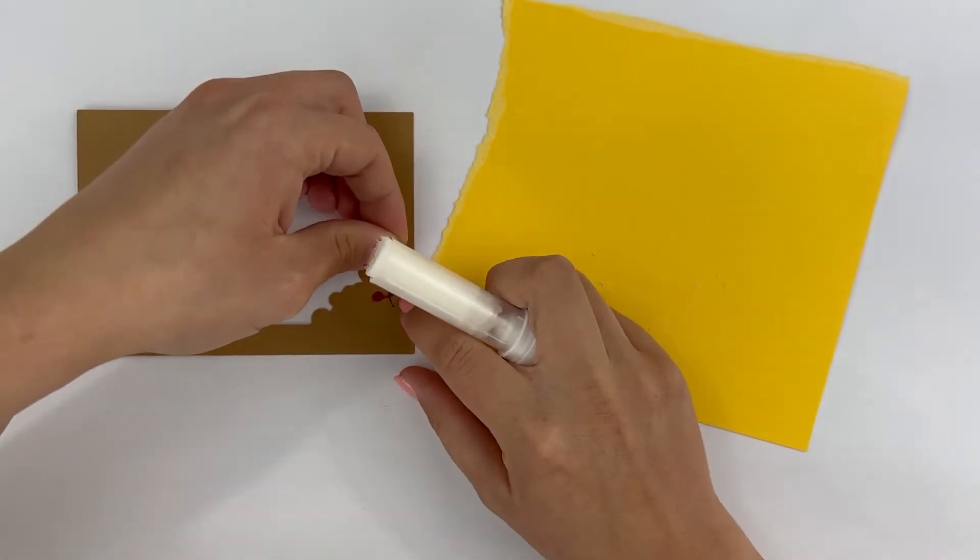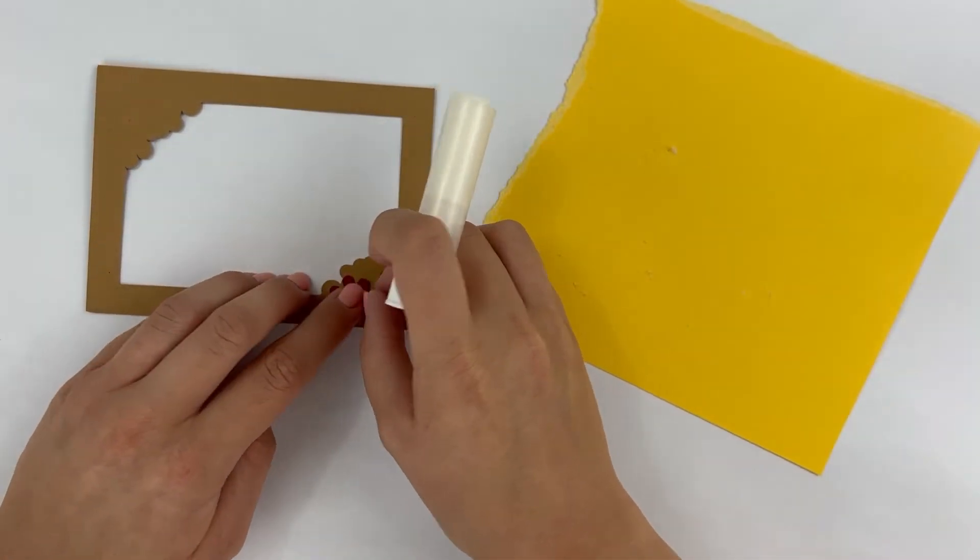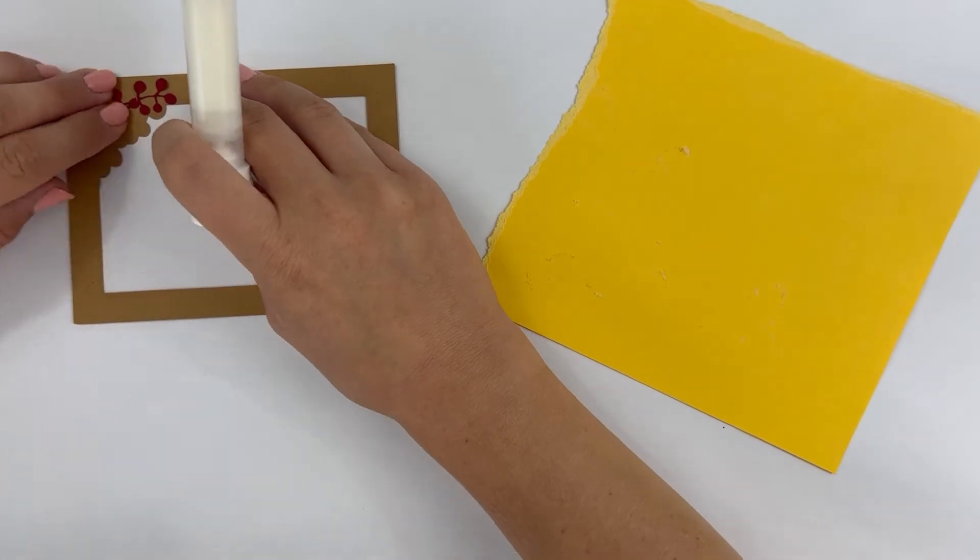Once I've added all the details, it's time to assemble the card. This is a window card which means that there are slight protrusions that mimic looking through a window.